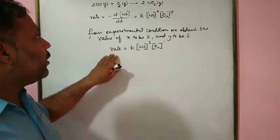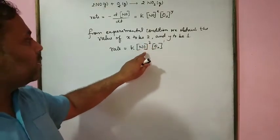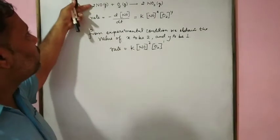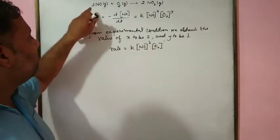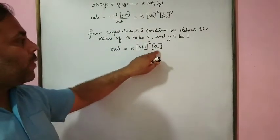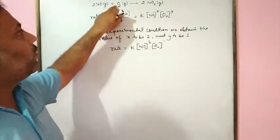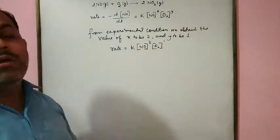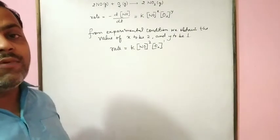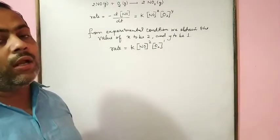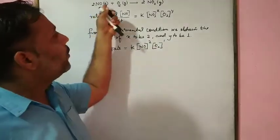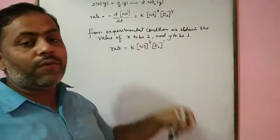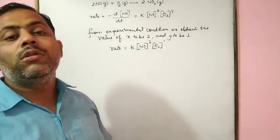In this relation, we observe that the raised power to the concentration of the reactant is similar to that of the stoichiometric coefficient. The power of NO is 2, and the stoichiometric coefficient of NO is 2. The power of oxygen is 1, and the stoichiometric coefficient of oxygen is 1. So in this experimental condition, the values of X and Y obtained from experimental data are similar to their stoichiometric coefficients in the balanced chemical equation. But I have told you that these values of X and Y may or may not be equal to the stoichiometric coefficients.